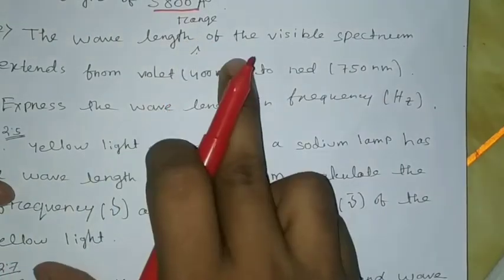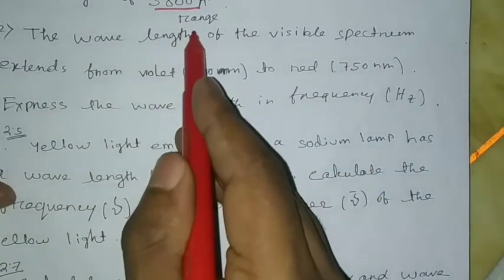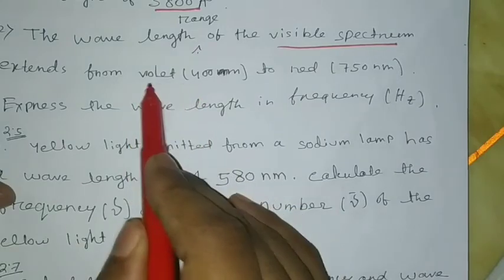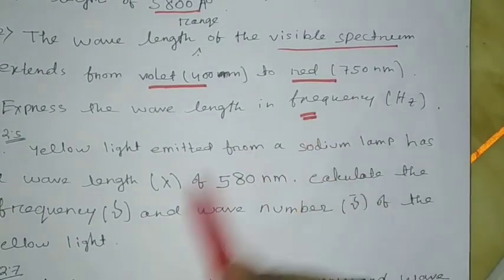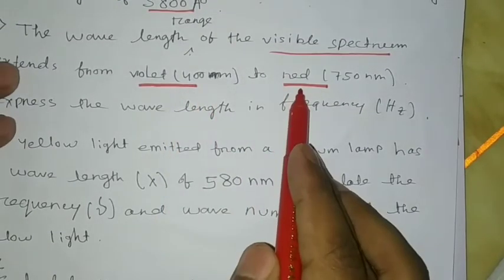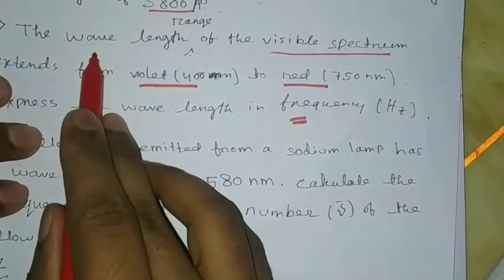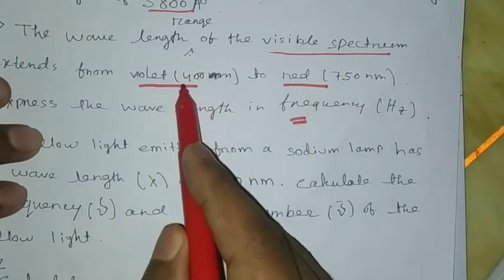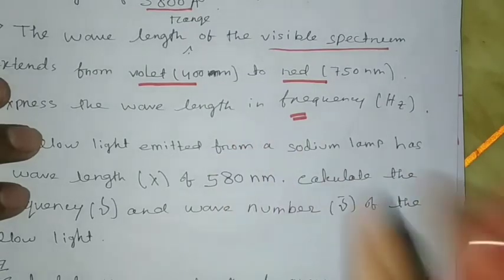The next problem: the wavelength range of the visible spectrum extends from violet to red. Express the wavelength in frequency. We need to convert the visible spectrum wavelength range to frequency. The violet wavelength is 400 nanometers and the red wavelength is 750 nanometers. We will convert both the violet and red wavelengths to their corresponding frequencies.